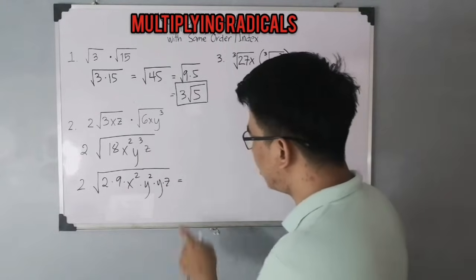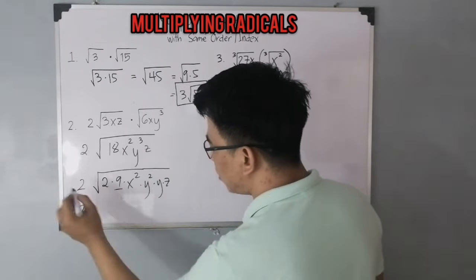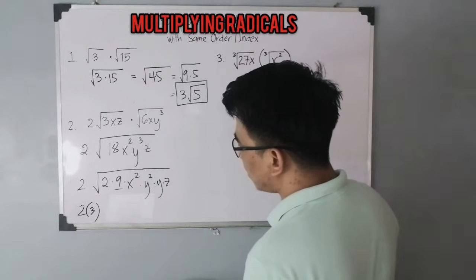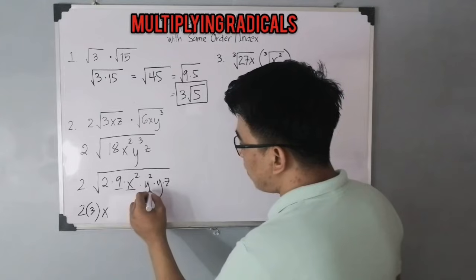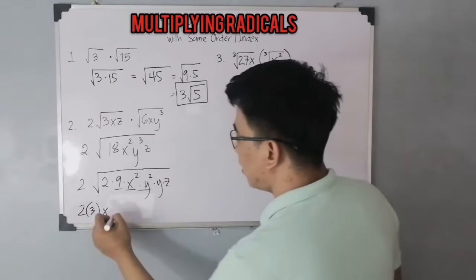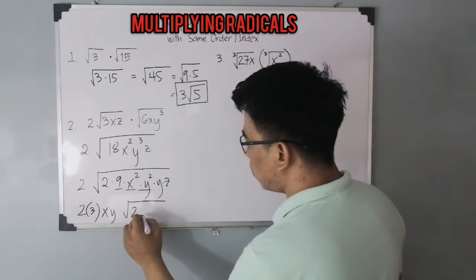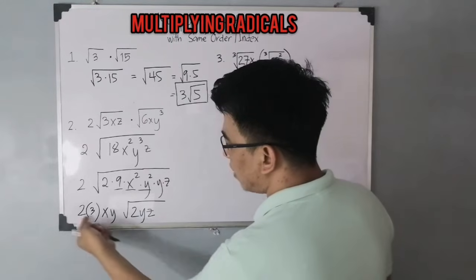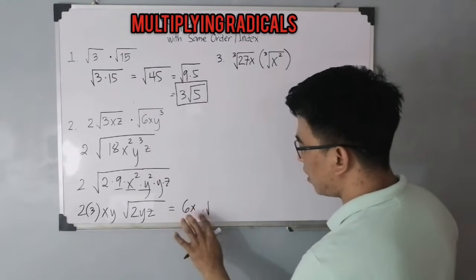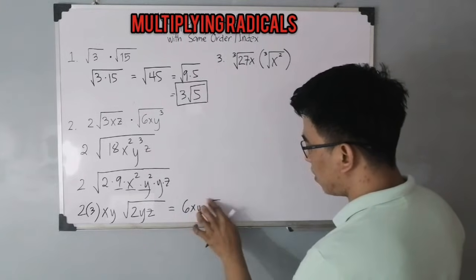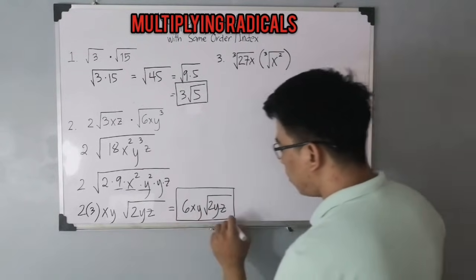Simplifying: the square root of 9 is 3, so outside we get 2 times 3. The square root of x squared is x, and the square root of y squared is y. The remaining radicand inside the radical is the square root of 2yz. So the final simplified form is 6xy times the square root of 2yz. This is the simplified form of item number 2.